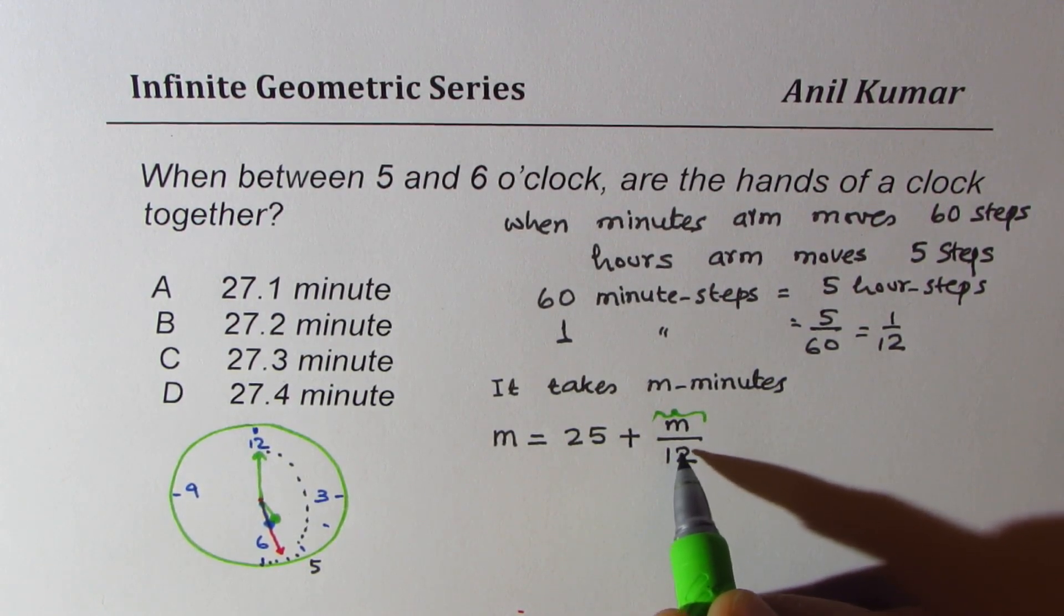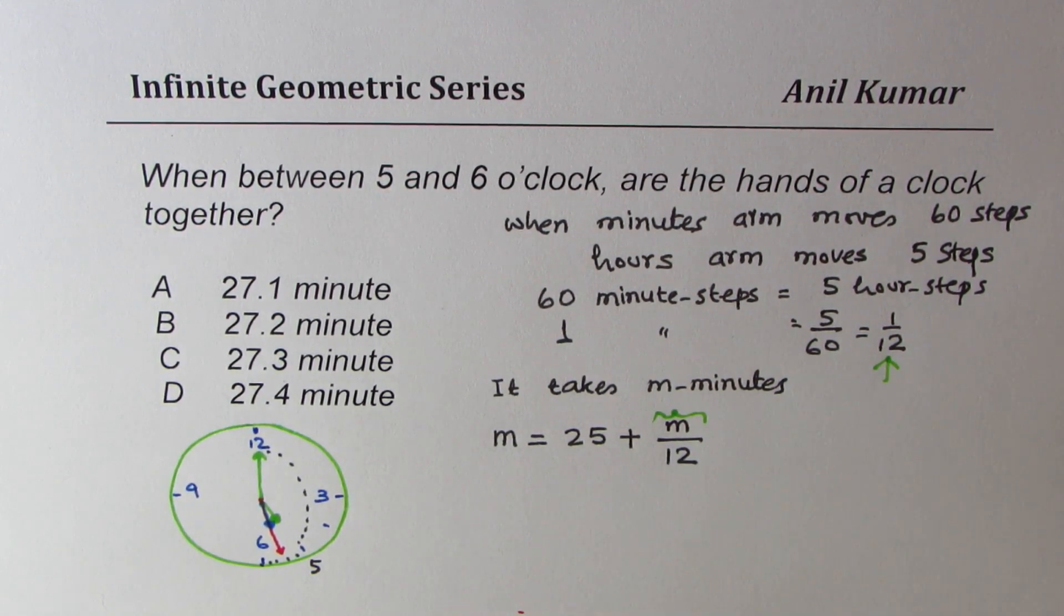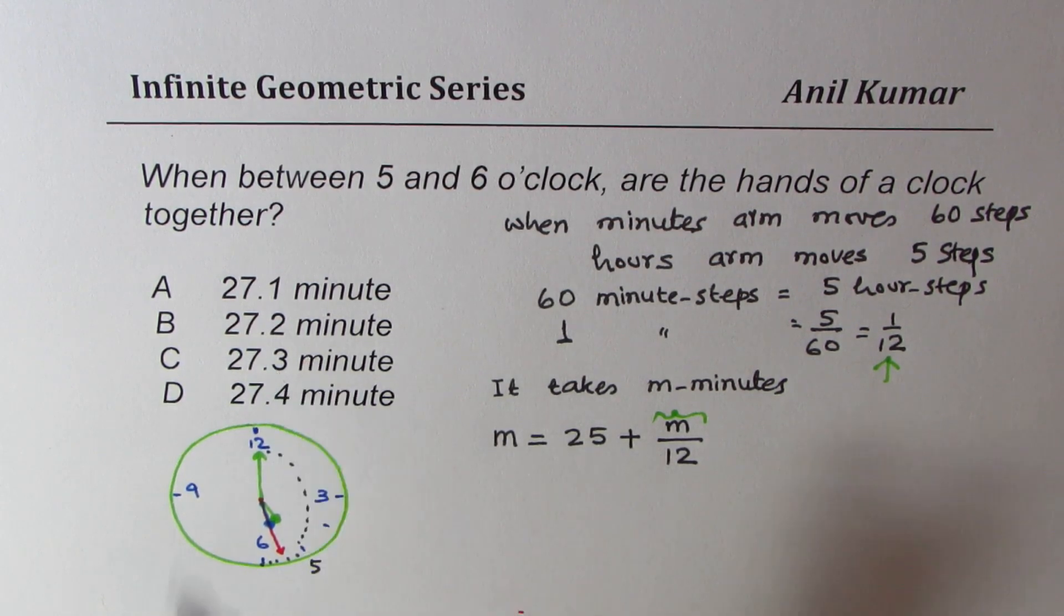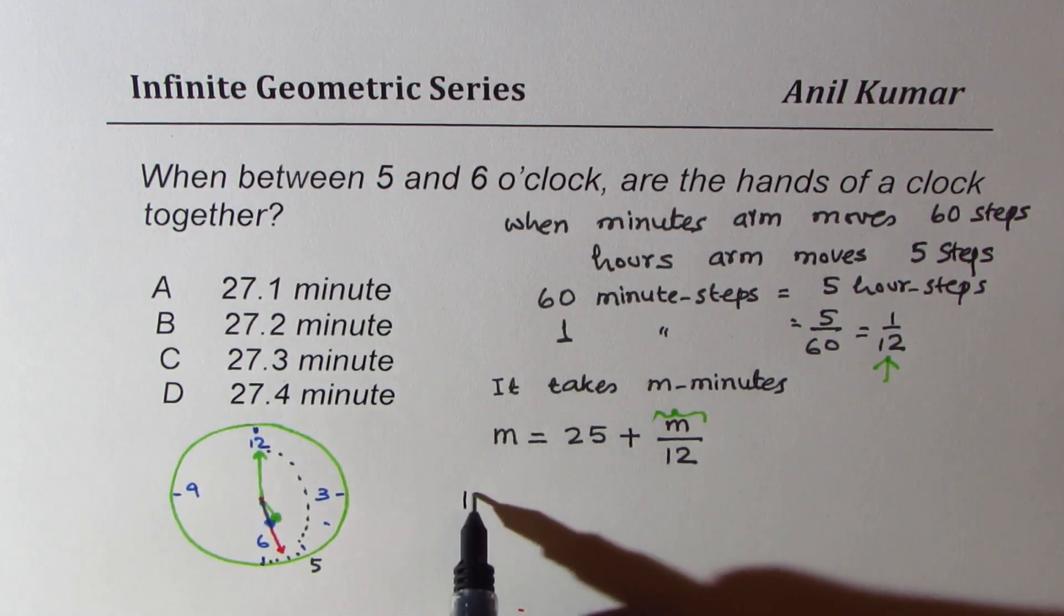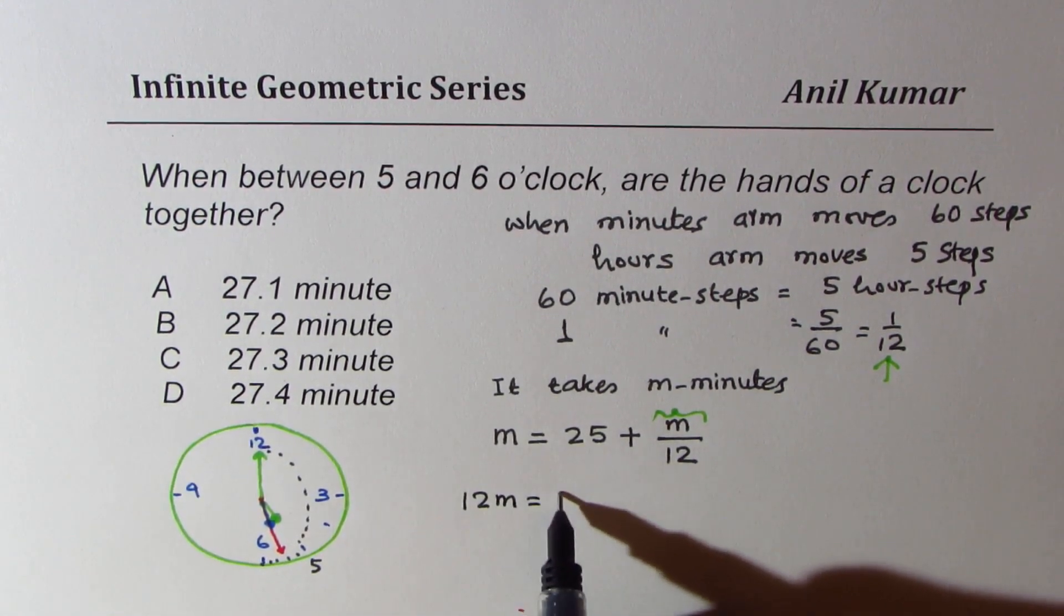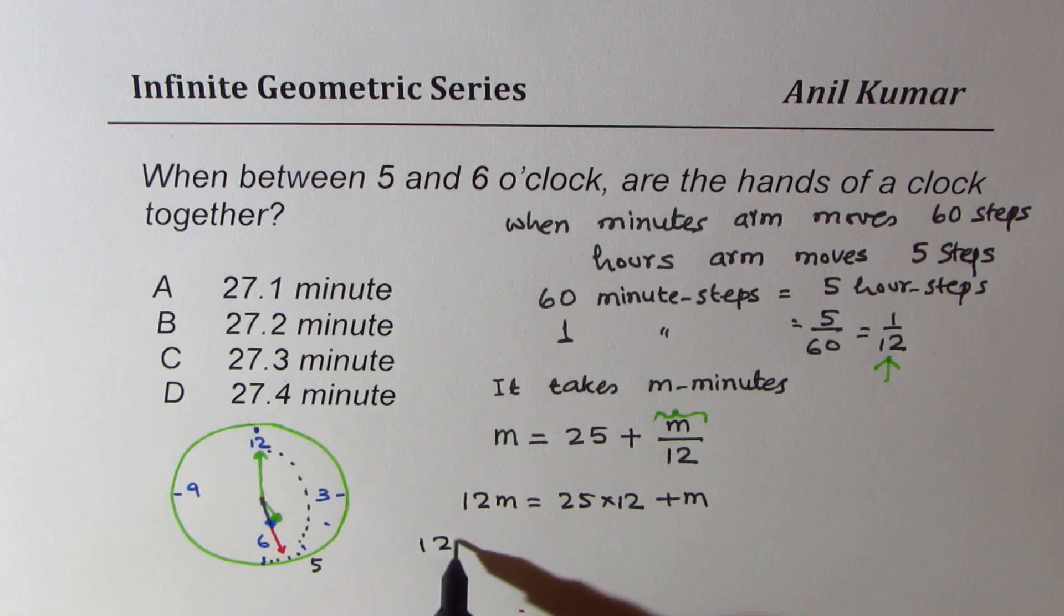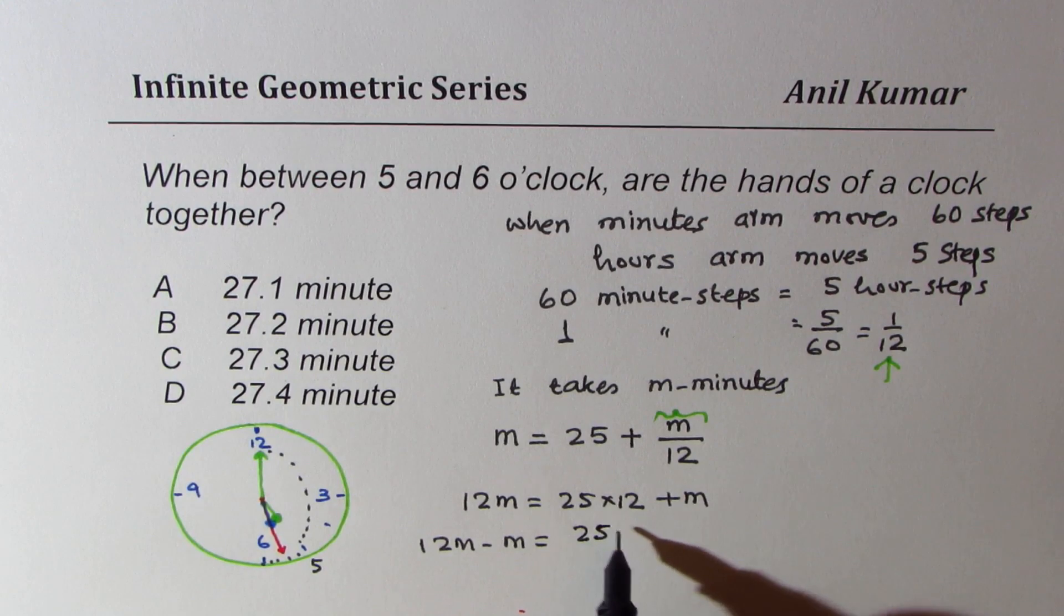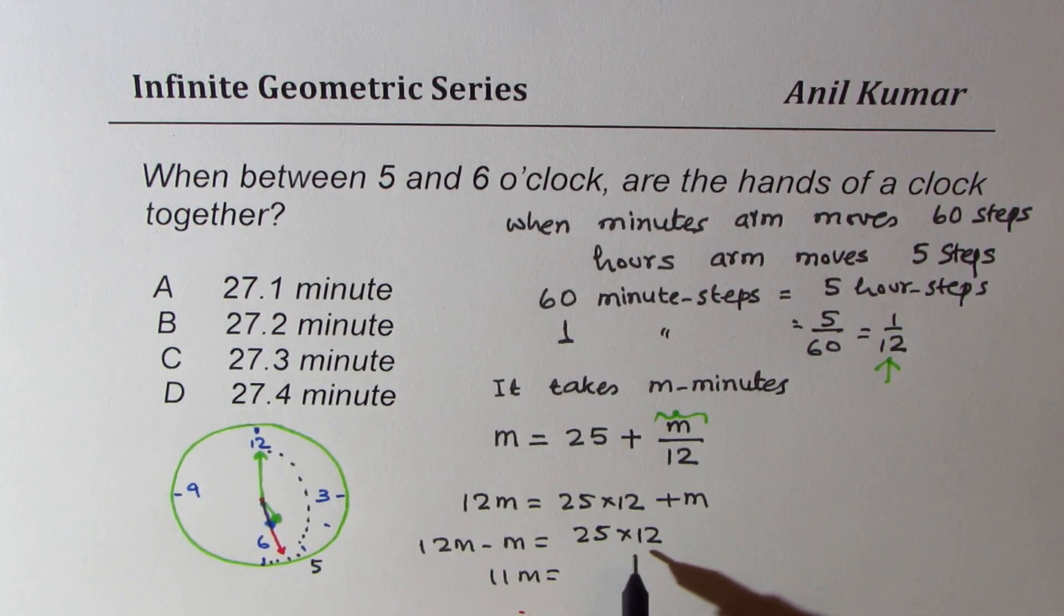So that forms an equation. And solving this equation you can very easily get the answer to such questions. So let's cross multiply—multiply everything by 12, so we get 12m equals to 25 times 12 plus m. And then we have 12m minus m equals to 25 times 12, and that is 11m, right, equals to 300.